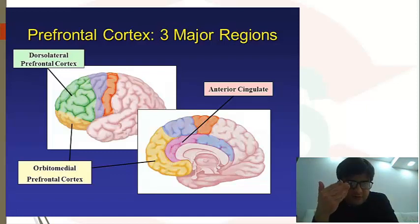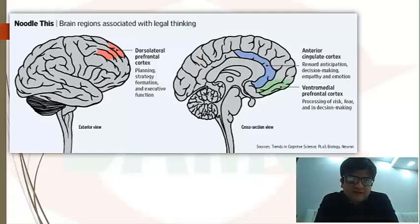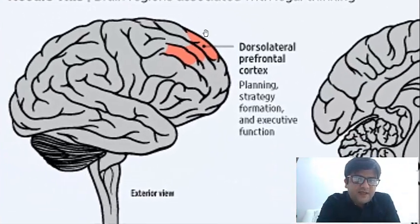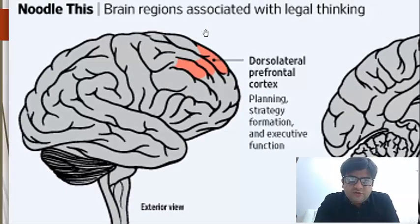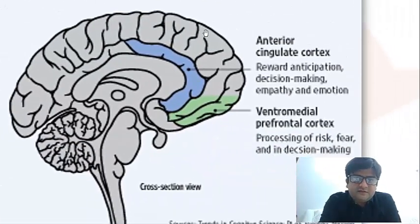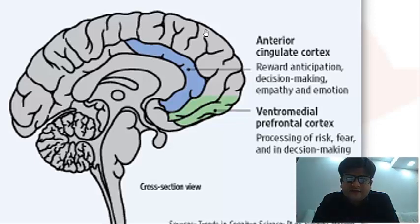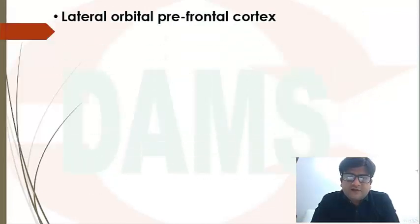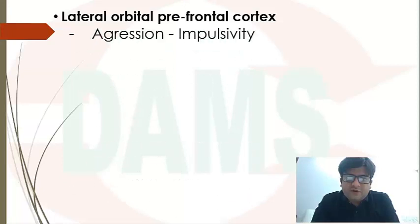From the DLPFC, the functions are: planning, strategy formation, and executive function — which includes planning, organizing, sequencing, and abstracting. VMPFC is involved in processing of risk and decision making. Anterior cingulate is involved in reward anticipation, decision making, empathy, and emotion. For orbitofrontal cortex, remember it with the letter 'O' — orbitofrontal cortex is responsible for obsession.